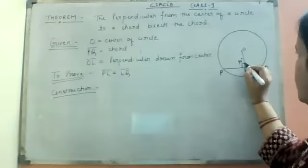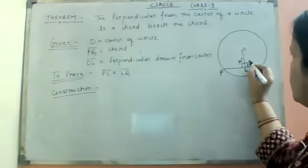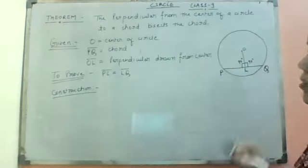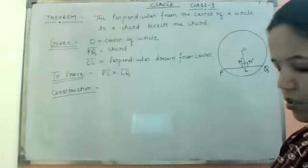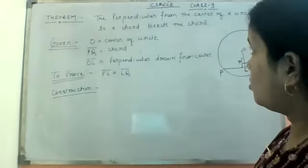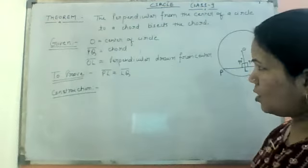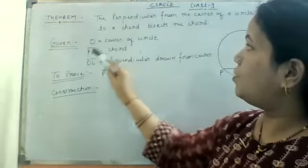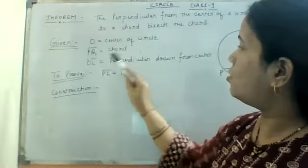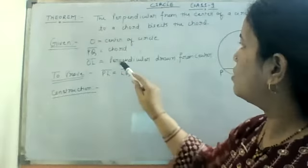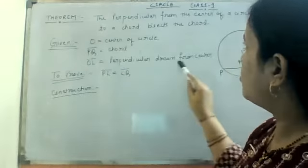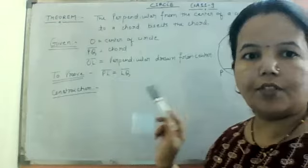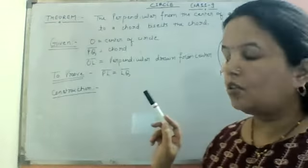The perpendicular is that line that is making 90 degrees. If it is making 90 degrees, that means this angle is also 90 degrees. So that is the perpendicular. We have written the given: O is the center of a circle, PQ is the chord, OL is the perpendicular drawn from the center.